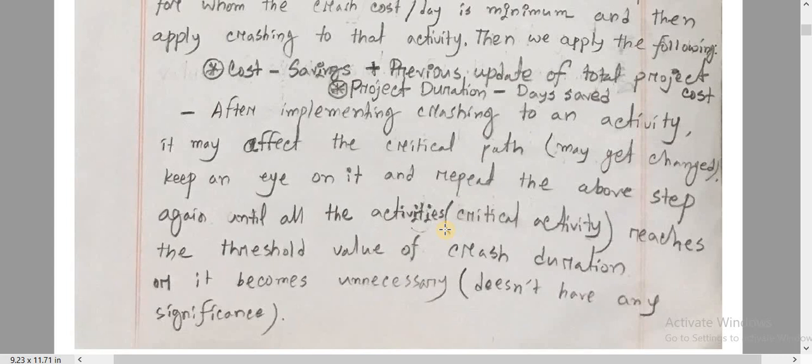For example, we can apply crashing for 3 days, then further crashing for 2 days, and further crashing beyond that. At some point, we hit the threshold value and we must stop applying crashing to that activity.